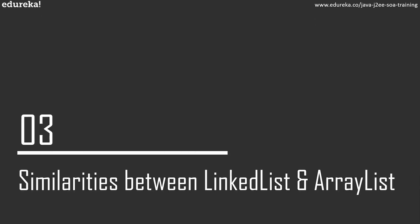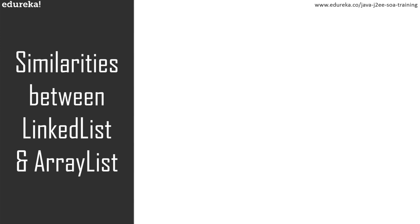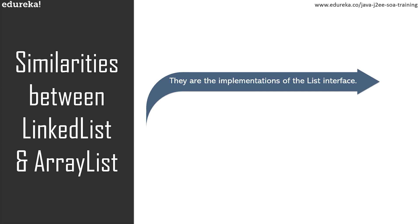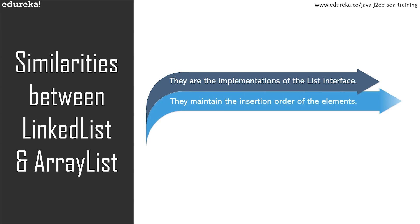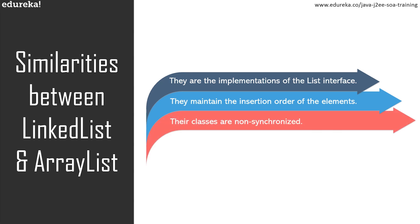Let's take a look at the similarities between ArrayList and linked list. Both ArrayList and linked list are implementations of the list interface. Both maintain the insertion order of elements, meaning the result set will display elements in the same order they were inserted. Also, both ArrayList and linked list classes are non-synchronized and can be made synchronized explicitly by using the Collections.synchronizedList method.